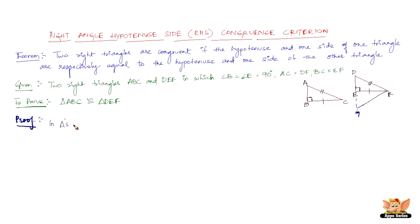In triangles ABC and GEF, we have AB equals GE, because we drew it such that EG equals AB. And angle B equals angle FEG, equal to 90 degrees, because angles on a straight line — if angle B is 90 degrees, then angle FEG is also 90 degrees.